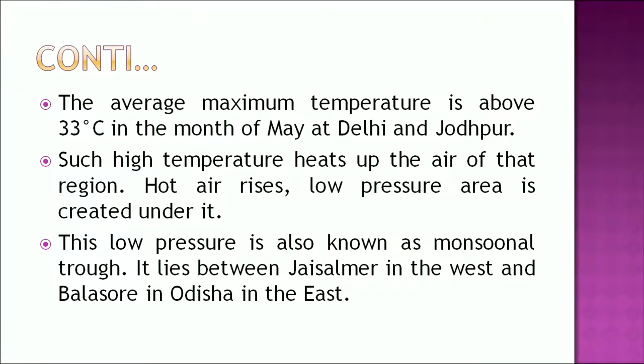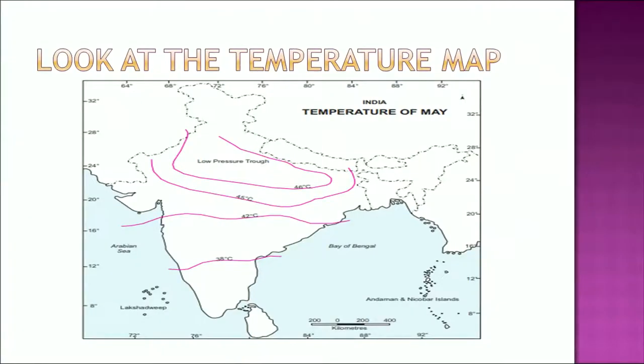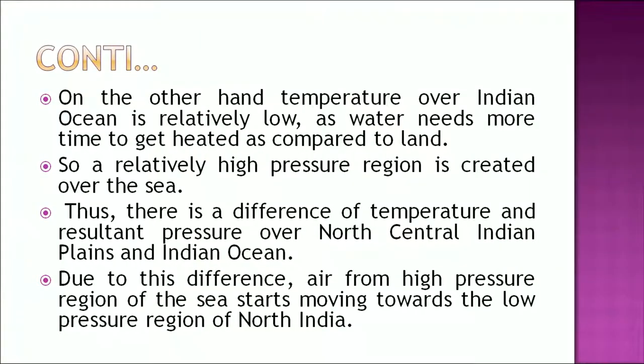The monsoonal trough lies between Jaisalmer in the west and Balasore in Odisha in the east. This temperature map of May shows the low pressure region in the northern part of India. On the other hand, temperature over the Indian Ocean is relatively low as water needs more time to get heated compared to land, so a relatively high pressure region is created over the sea. Thus, there is a difference in temperature and resultant pressure between north-central Indian plains and the Indian Ocean, causing air to move from the high pressure region of the sea towards the low pressure region of North India.